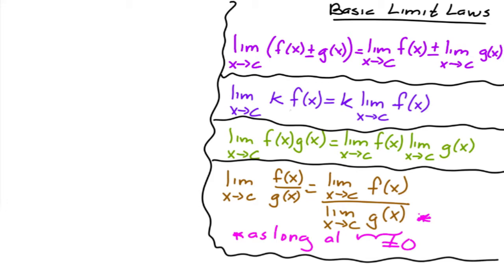The second law says that if you have a constant multiplying a function, you can take that constant out of the limit. That's a really important one. These are all important, but that one we use a lot.